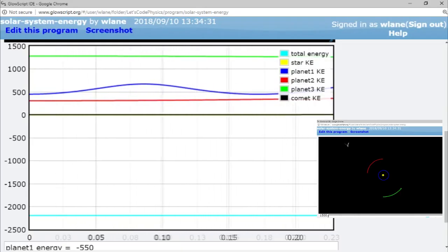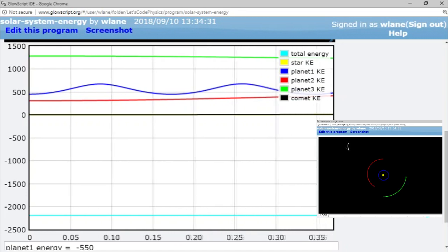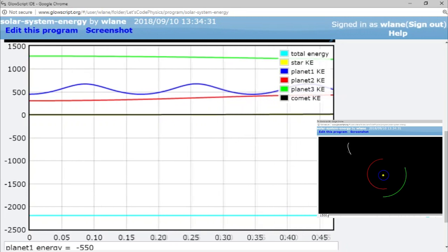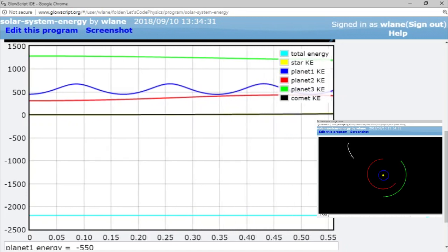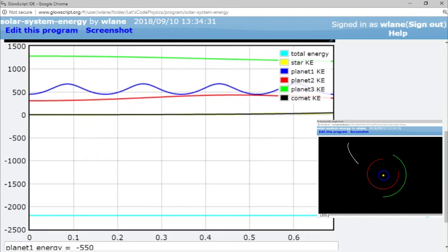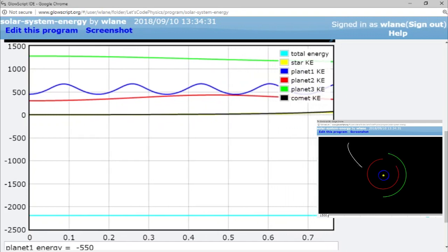Running the code, we see that while each kinetic energy changes, the total energy for the system remains constant. In essence, the objects in our system are trading energy back and forth, but the whole system never loses or gains any energy.